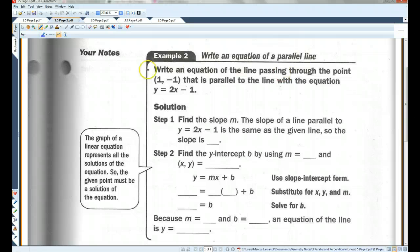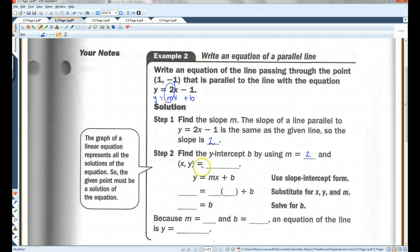Write an equation of the line passing through the point 1, negative 1 that is parallel to the line with the equation y equals 2x minus 1. First thing we have to do, find the slope. The slope of the line parallel to y equals 2x minus 1 is the same as the given line. Y equals mx plus b. This is our slope. The slope is 2. Now, the y-intercept is going to be different. It's not going to have the same y-intercept as this line. It's going to have a different one. We need to find the y-intercept by using m equals 2.